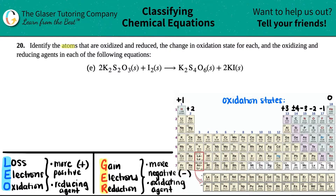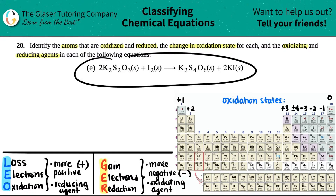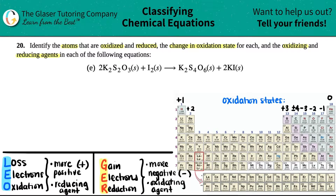Number 20: identify the atoms that are oxidized and reduced, the change in oxidation state for each of them, and find the oxidizing agent and the reducing agent in each of the following equations. We have letter E out of the bunch. We've done a couple of problems just like this — it's all in the playlist. They're asking for atoms that are oxidized or reduced, meaning we're looking for elements.